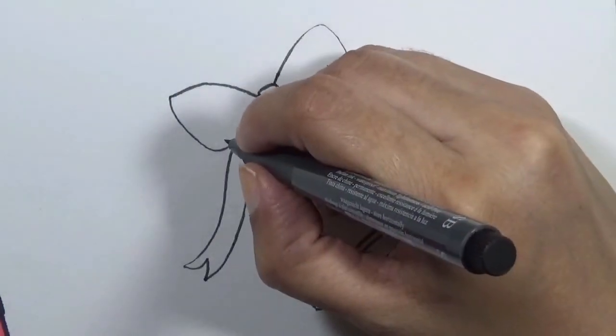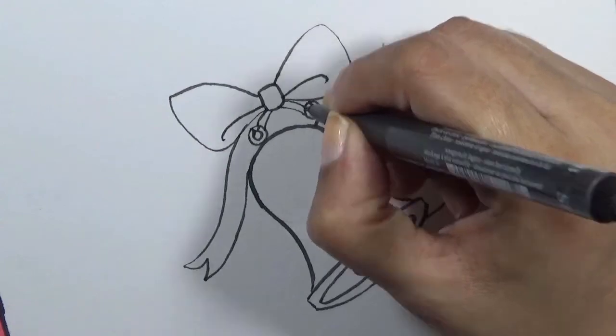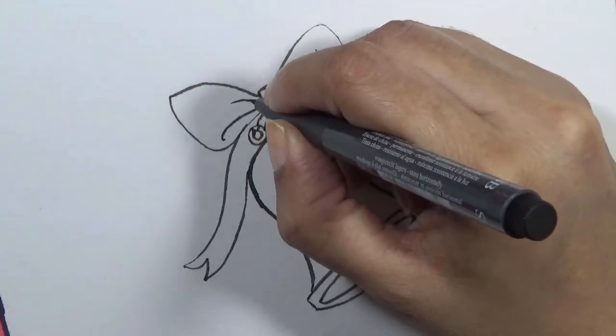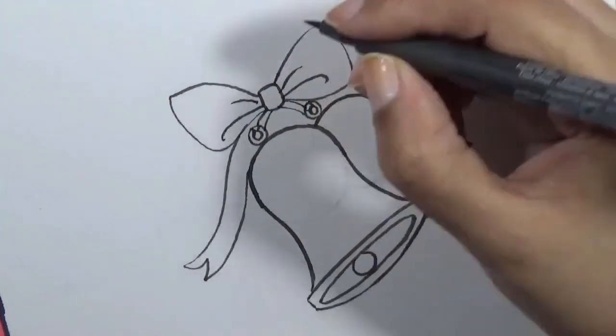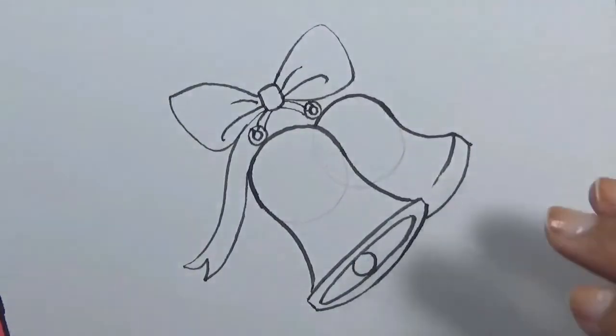In this ribbon, you will show some lines to show that this is very realistic and this is your drawing of the bell.